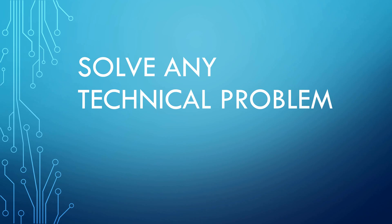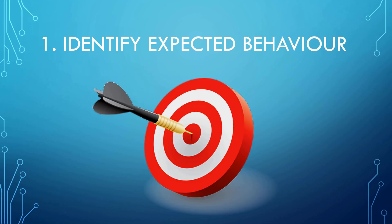Here are five steps to solve any technical problem. Step number one: identify expected behavior. How should the system function under normal conditions? If you use the system regularly, this is obvious to you, and you know exactly how the program should function. But if you're troubleshooting a system you're unfamiliar with, you first need to outline exactly how this system should work when there are no errors.